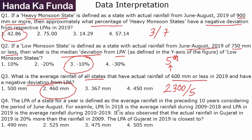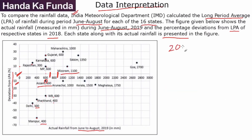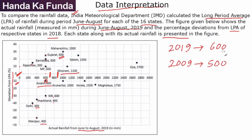Question 4: The LPA of a state for a year is defined as the average rainfall in the preceding 10 years during June to August. For example, the LPA in 2018 is the average rainfall during 2009 to 2018, and the LPA in 2019 is the average rainfall during 2010 to 2019. It is also observed that the actual rainfall in Gujarat in 2019 is 20% more than the rainfall in 2009. Gujarat's 2019 rainfall is 600 mm, and this was 20% higher than 2009. So the 2009 value is 600 ÷ 1.2 = 500 mm. So I have the value for 2009 (500 mm) and for 2019 (600 mm).